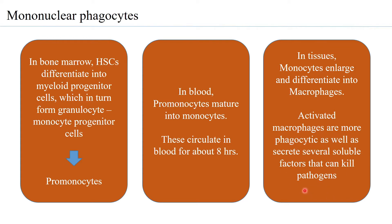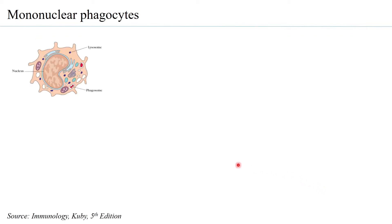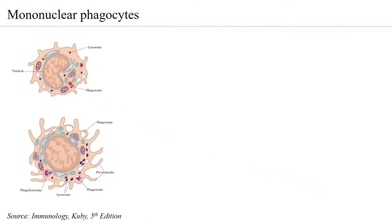Activated macrophages secrete several soluble factors that can kill pathogens — so they are not just phagocytic but they also secrete soluble factors which help in killing pathogens. When you look at the journey from monocytes to macrophages, one observes that as monocytes begin to differentiate into macrophages, the cells enlarge five to ten-fold.